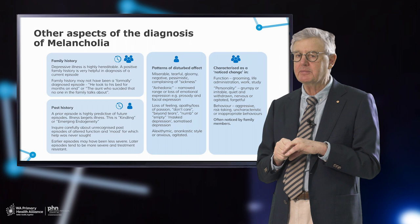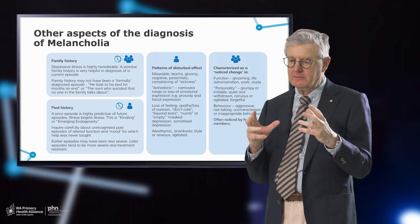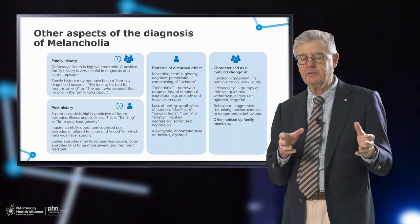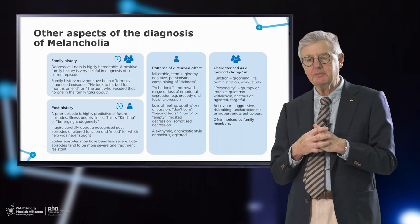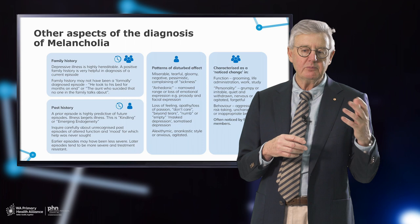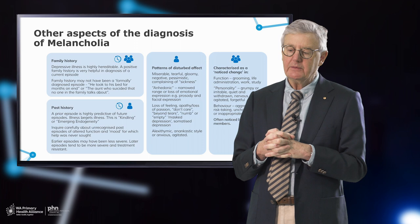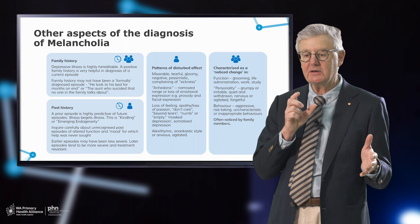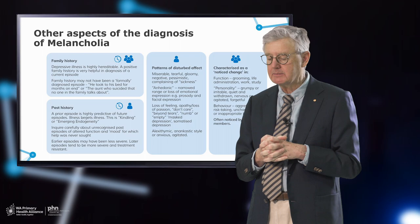With past history, particularly for young people, you need to track back to late high school and university years, because those earlier episodes are often milder and were never recognised. It is often the case that the first diagnosis is made on a second, third, or fourth episode. Tracking back to recognise previous episodes helps us understand the growing severity and potential treatment resistance.